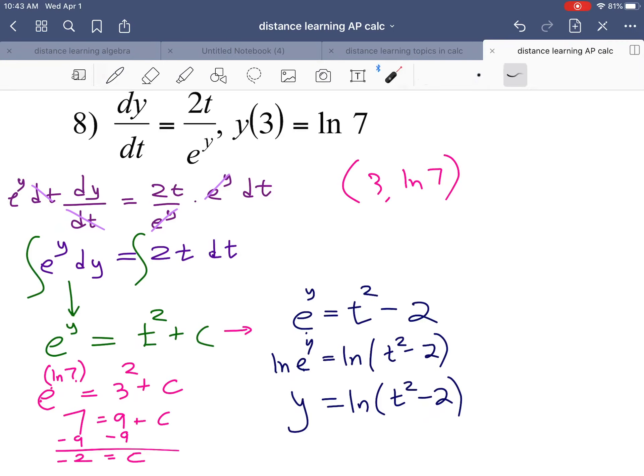Now we also have to think about the domain of the ln function. This whole thing has to be greater than 0. So if t squared minus 2 has to be greater than 0, add 2, add 2. T squared is greater than 2. Square root both sides.